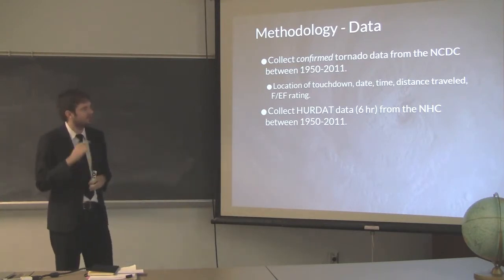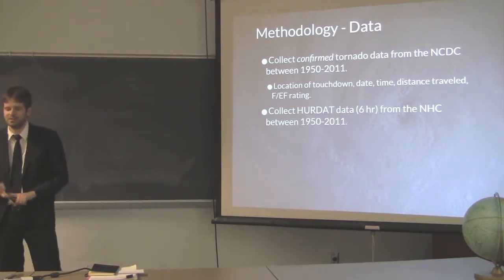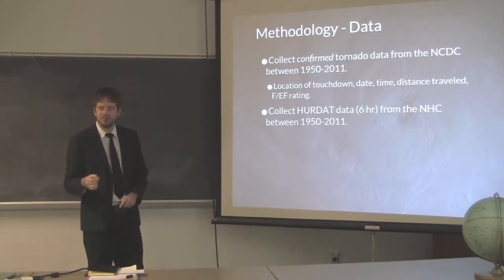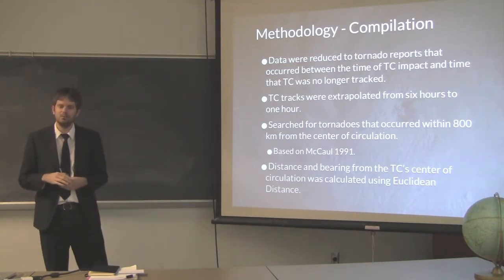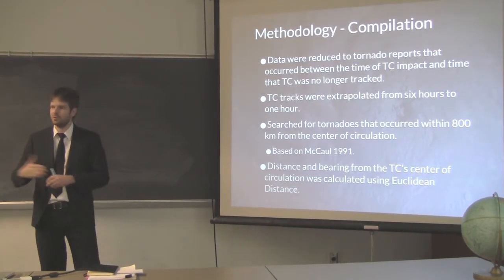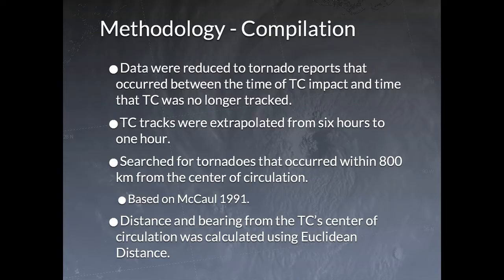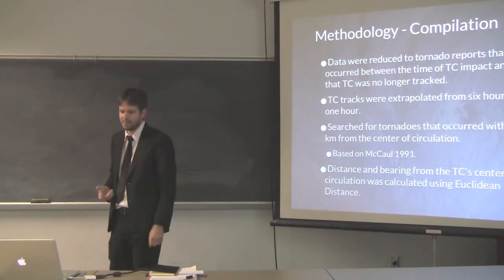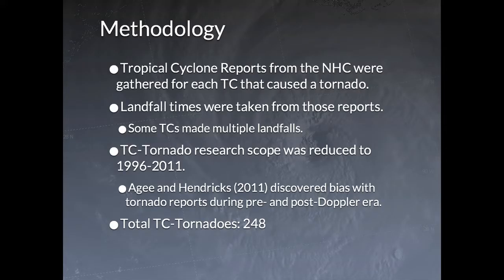We collected confirmed tornado reports between 1915 and 2011, including location of touchdowns, geographic coordinates, date, time, distance traveled, F/EF rating, etc. For the same time period, we collected HURDAT data at six-hour intervals. Data were reduced to tornado reports that occurred between TC time of impact and the TC going over water. TC tracks were then extrapolated from six-hour to one-hour intervals, and we searched for tornadoes that occurred within 800 kilometers of the center of circulation, based on McCall's 1921 paper. Distance and bearing were calculated using geodetic distance. TC reports from the NHC were also gathered so that landfall times could be determined.